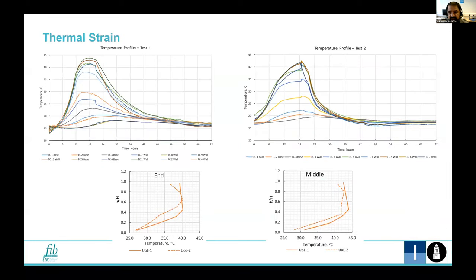Temperature development in the wall and slab is monitored using the thermocouples. This graph here, the two graphs indicate the thermal profiles observed in the two tests. The first thing to notice is that there is an increase in the temperature in the slab as well, because of the heat of hydration in the wall. That is transferred to the slab.